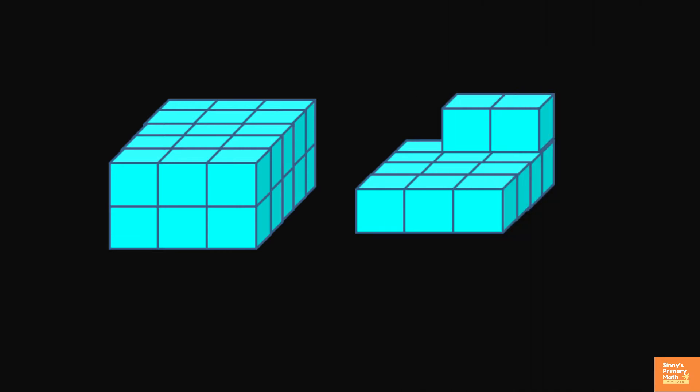Here are some cubes arranged in different shapes as shown. Guess how many cubes are there when observed from the view shown by the arrow mark. Try to guess the number of cubes in the following arrangements.